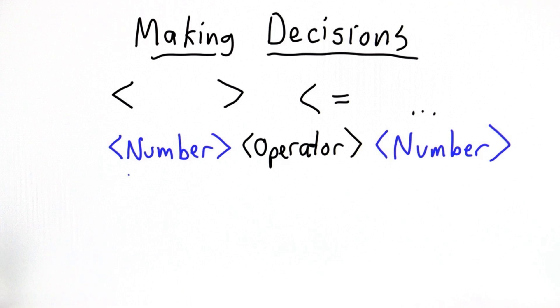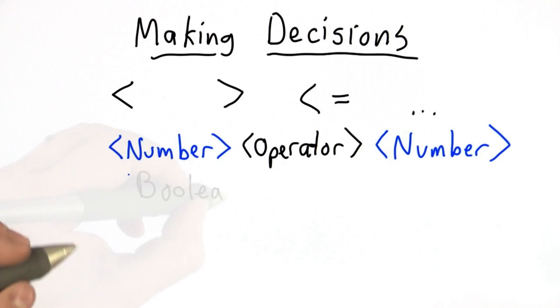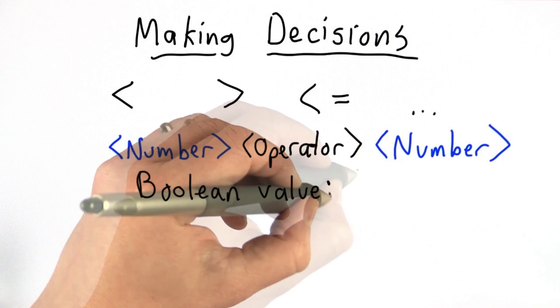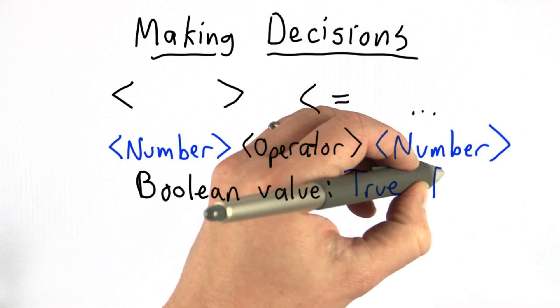The output of a comparison, though, is not a number. It's a Boolean value. And a Boolean value is one of two things: either the value true or the value false.